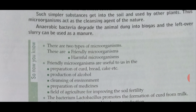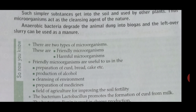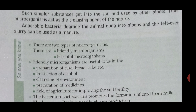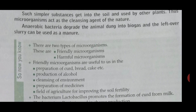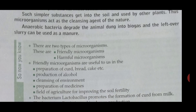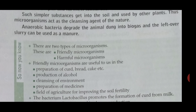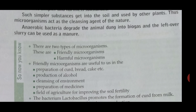Anaerobic bacteria degrade animal dung into biogas, and the leftover slurry can be used as manure. Animal dung, which is animal waste, is converted into biogas, and the residue of the waste is used as manure.